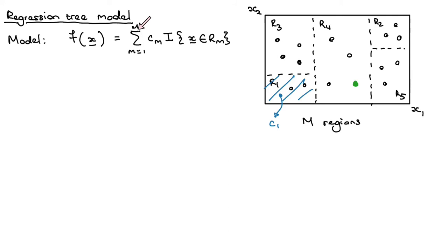We sum over all regions from 1 to 5. For each region we check: does this data point x lie inside that region? It doesn't lie in region 1 — so that's 0, nothing added. Not in region 2 — nothing. Not in region 3 — nothing. Region 4: the indicator function returns a 1, and we multiply that by C4. It doesn't lie in region 5, so the overall model returns C4, which is exactly what we'd expect.